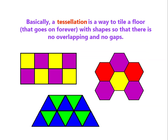Basically, a tessellation is a way to tile a floor that goes on forever, using shapes so that there is no overlapping and no gaps. These are some basic examples — some are just flipping, some are mirrored, and some are translation. This is how you will transform objects: translation, rotation, dilation, and reflection. Review this topic, try to study, and check the videos — there are many examples so that you will understand more about transformation. That's all for our discussion for today.